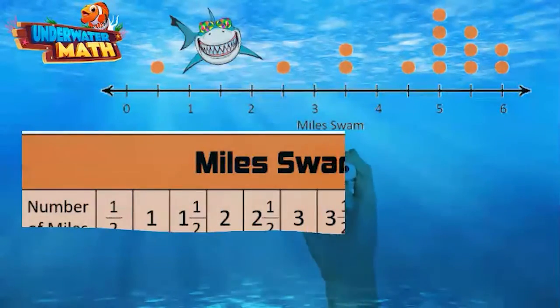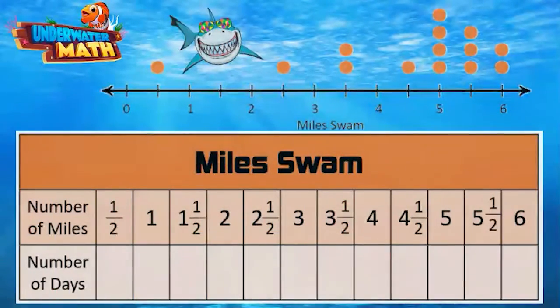Only fresh meat. Right, so let's fill in this table based on the dot plot. The top row shows the miles you swam, that corresponds to the number line of the dot plot. The bottom row shows the number of days you swam that amount of miles, that corresponds to the number of dots. So there is one dot above the one-half mark, which means you swam a half mile on one day.